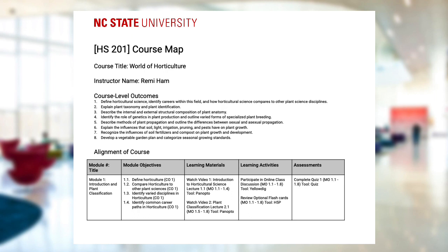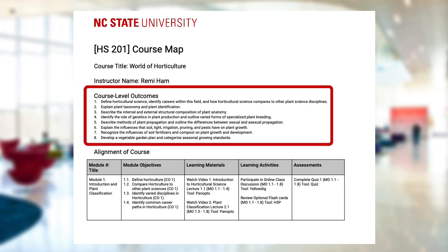After the course title and instructor name you'll see the course level outcomes, also known as course objectives. These are specific measurable things that students will be able to do upon successful completion of the course. Course objectives may be broad but they should still be clear and measurable.